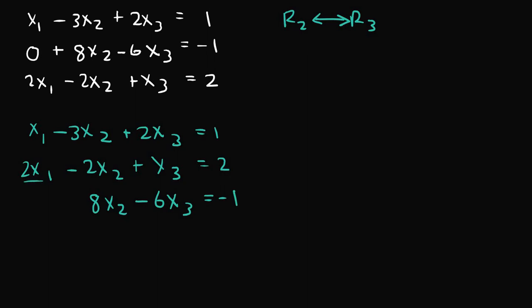So now this term is not a 0 anymore, but now we can actually make this a 0 term by taking r2 plus negative 2r1, and that gives us our new r2.